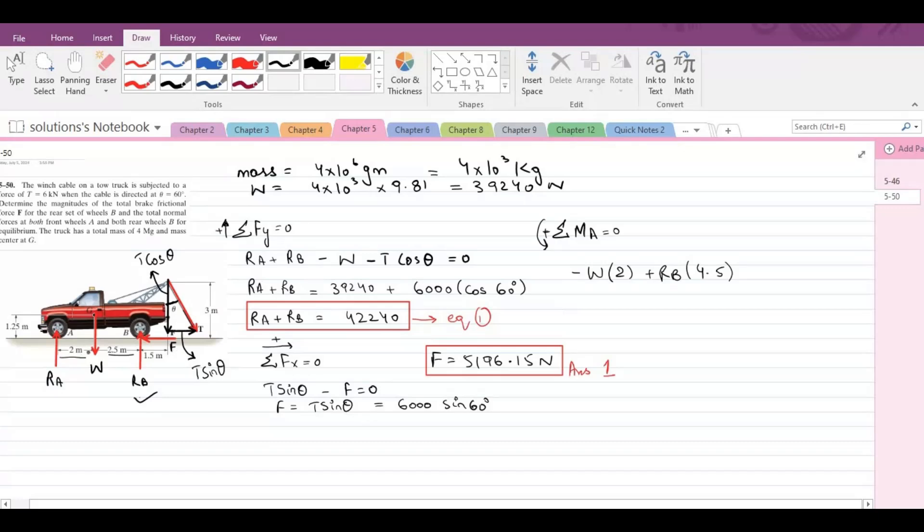The frictional force F is passing through point A, so it will also not produce any moment about point A. If you look closely, the point A is this point, the contact between the tire and the road basically. So the frictional force, the line of action of frictional force is also passing through point A. That's why the frictional force will not produce any moment about point A.